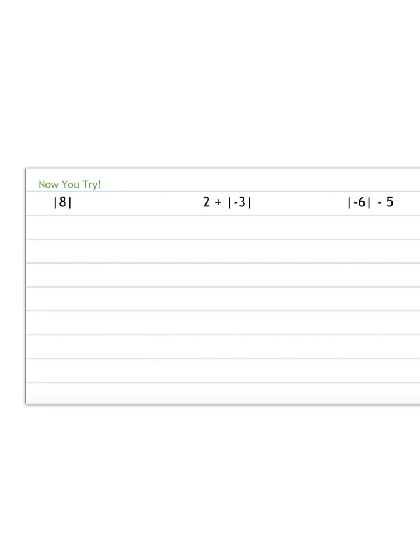Here are some for you to try and then come back and check after. The absolute value of 8, well, how many spots away from 0 is 8? We could use our number line. Here's 0: 1, 2, 3, 4, 5, 6, 7, 8. Well, to get there, it is 8 spots away. So therefore, the absolute value of 8 is 8.